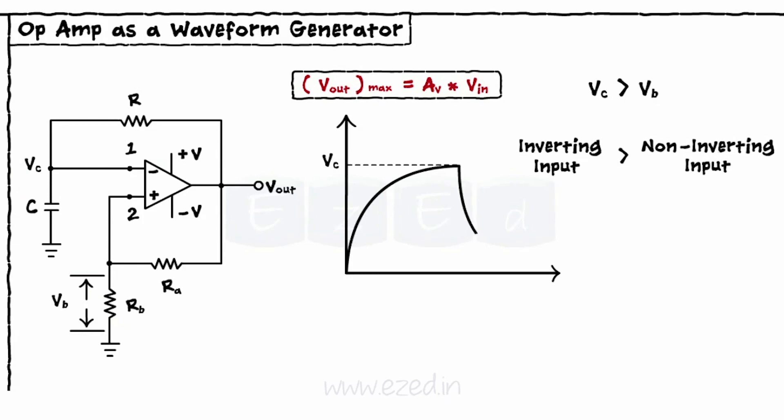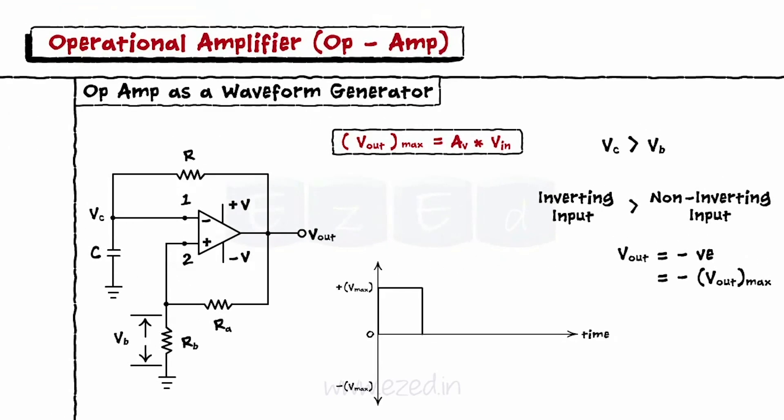And hence, op-amp output switches to negative voltage and gets amplified till minus VOmax. Thus, we get the negative half of the square wave. This is the application of an op-amp as a square wave generator.